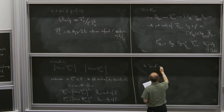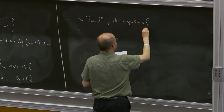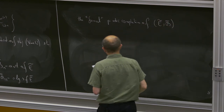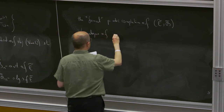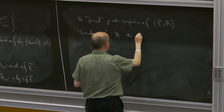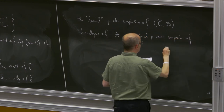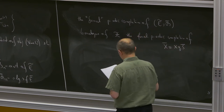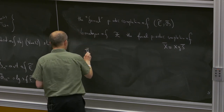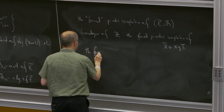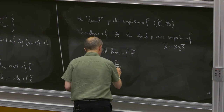I will now define the formal p-adic completion of the formal scheme X-bar, which is X where we extend scalars from S to S-bar. First I need to define the special fiber of the Faltings topos of E-tilde. This is a topos I will denote by E-tilde_S.